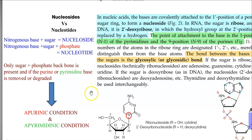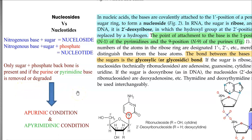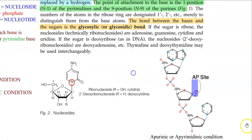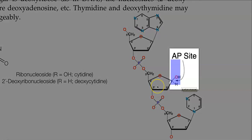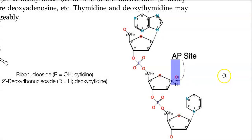There is also another condition called an apurinic or apyrimidinic state, in which sugar and phosphate are present but the nitrogenous base is absent — only the sugar-phosphate backbone remains. If a purine nitrogenous base is removed, it is called an apurinic condition; if a pyrimidine nitrogenous base is removed, it is called an apyrimidinic condition. In this image, the complete nucleotide has a nitrogenous base, sugar, and phosphate, whereas in this particular structure you can see the phosphate and sugar but the nitrogenous base is lacking, which is the apyrimidinic site.